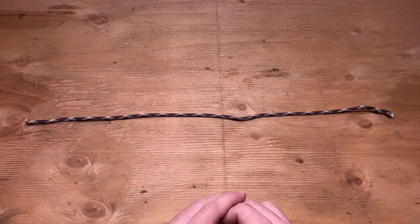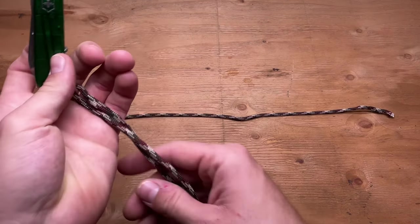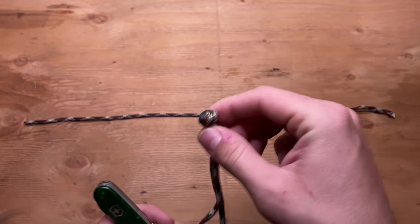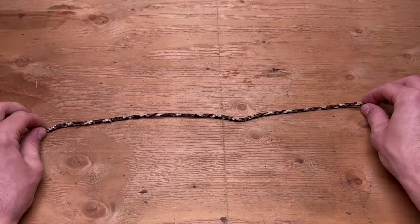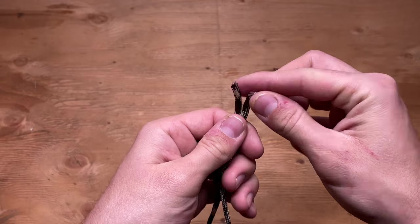We're going to be making this little knot. Very easy to make and I will show you how to do it right now. You're going to grab your paracord.